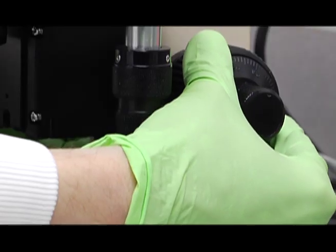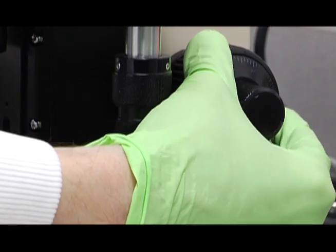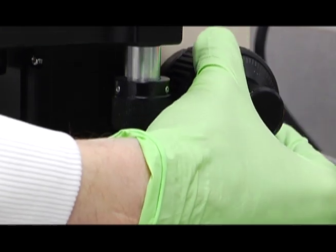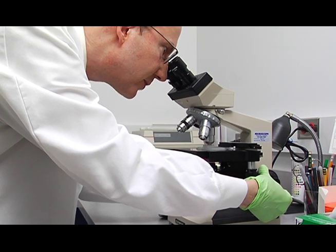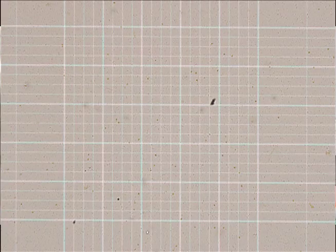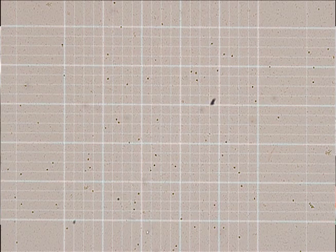Now lean over the microscope. Looking through the microscope, lower the stage away from your objective with the coarse focus knob until the rulings come into focus.